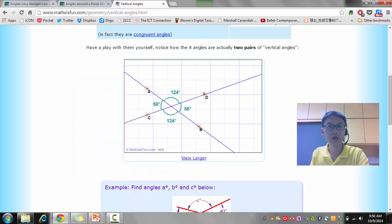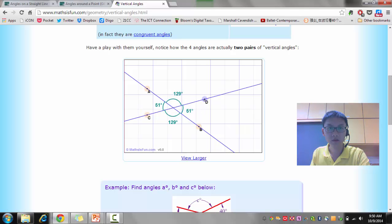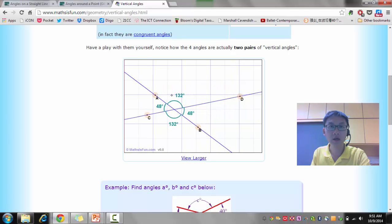So this is how the website looks like and it's quite fun. You can actually play and drag it around. So you see that no matter how much I drag, because these are two straight lines, the vertically opposite angles are always equal. So you can play around, you can just move it as much as you want, you will notice that it's always equal. The vertically opposite angles are always equal.